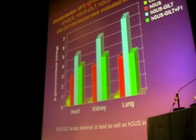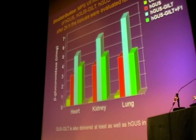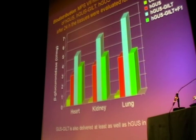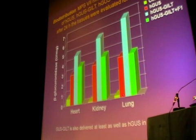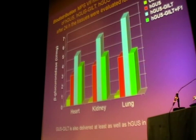We next looked at the biodistribution of these three enzymes by giving MPS7 mice 1 mg per kg — one dose at 1 mg per kg IV injection. After 24 hours, the tissues were evaluated for H-GUS activity. Here we're looking at the heart, kidney, and lung, and you can see in the yellow bars the low level of endogenous activity in these tissues. But if we infuse with wild-type GUS, we get a substantial delivery of enzyme to the tissue.